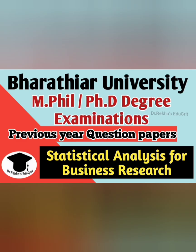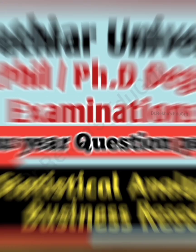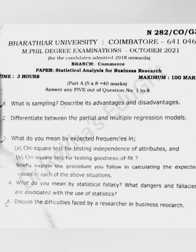Statistical Analysis for Business Research is a problematic paper. From your syllabus, you can expect 40% theory questions and 60% problem questions. Maximum marks of the question paper is 100. Total number of questions is 16, divided into two parts — Part A and Part B. In Part A, there will be 8 questions and you have to write 5. In Part B also, there will be 8 questions and you have to write 5. So the total number of questions you have to attend is 10. Here on the screen, you can see the question paper of the October 2021 batch.